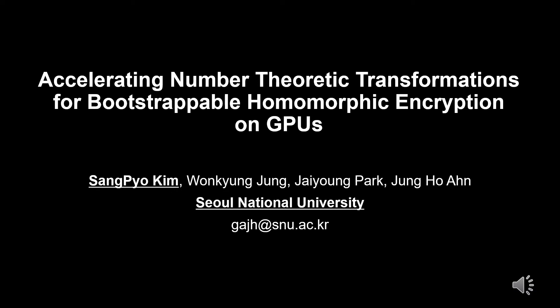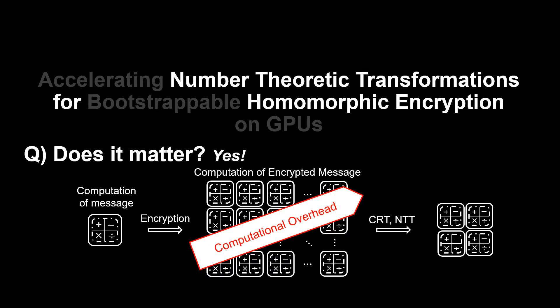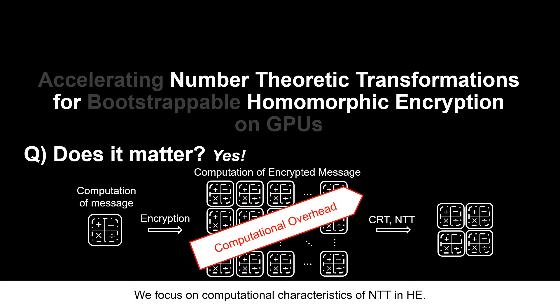A fundamental question about such a topic is: number theoretic transform? Homomorphic encryption? Does it matter? Yes. Homomorphic encryption is a promising cryptosystem which enables computation on encrypted messages. But enormous computational overhead is an obstacle to practical use. To mitigate such overhead, typical works of HE use Chinese Remainder Theorem and number theoretic transform. Among the two, we will focus on NTT.